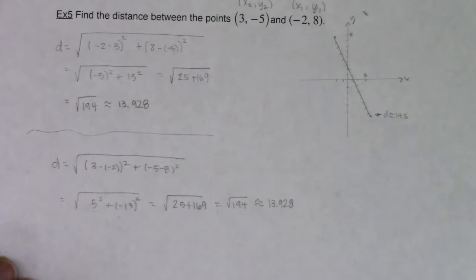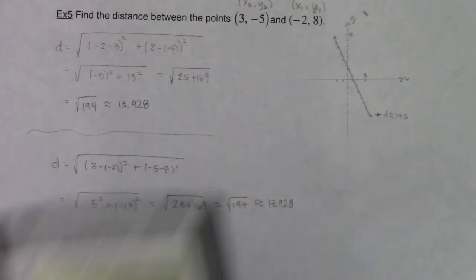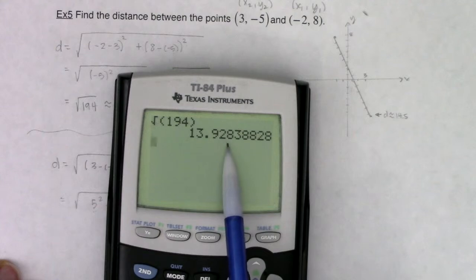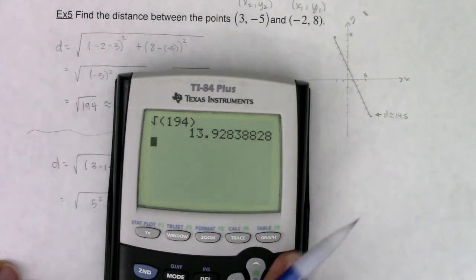And that was close enough to my approximation. And the reason I wrote approximate here is because this radical is the exact value. 13.928 is a decimal approximation, because really the decimal keeps on going forever and ever.